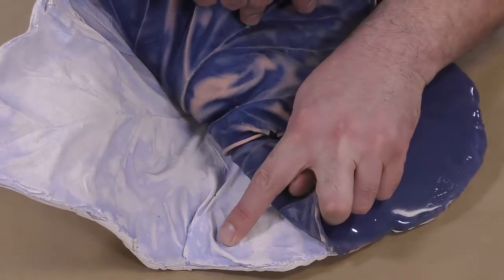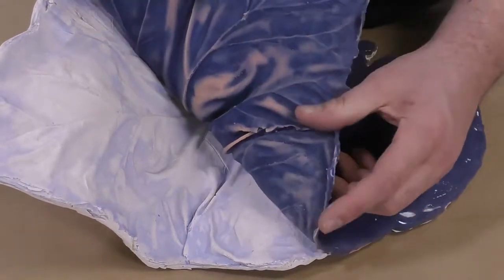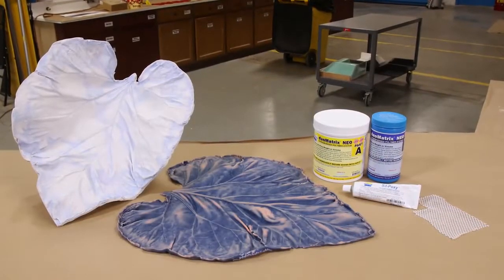So there you have it, a simple and inexpensive way to fix a torn silicone mold using the Silpoxy silicone adhesive.